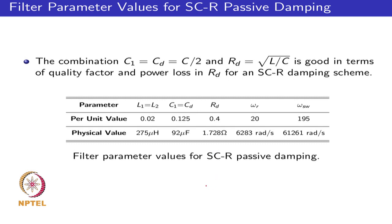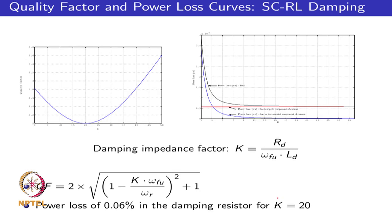The next question is how to select the damping inductor LD if you want to go for a split capacitor RL (SCRL) damped network. To address this, one can go back and look at the expression for quality factor and power loss. The approximate expression for the quality factor is 2√[(1 - k·(ω_fundamental/ω_resonance)²) + 1]. To minimize this, if you select k equal to ω_r/ω_fu, the term within the square goes away and you get a quality factor close to 2.